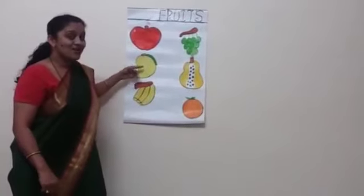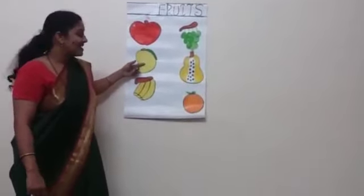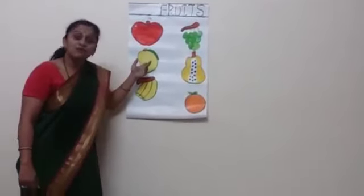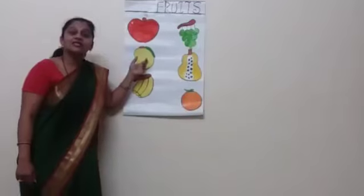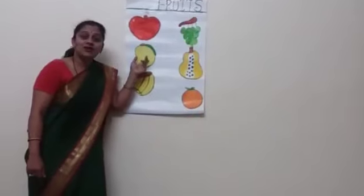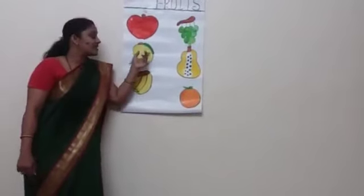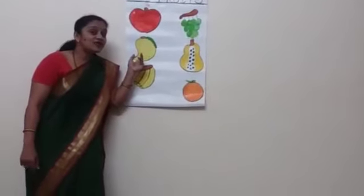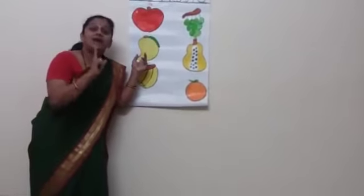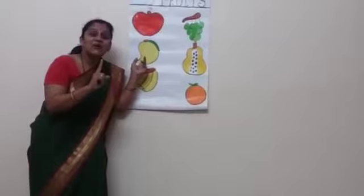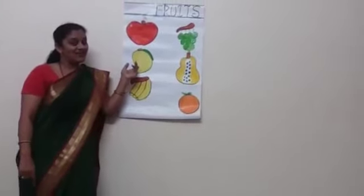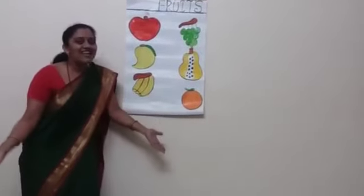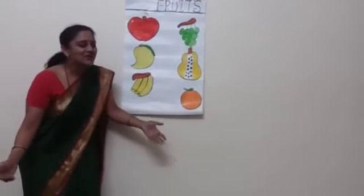Now next, what is this? This is a fruit. The name of this fruit is mango, and the color of mango is yellow.